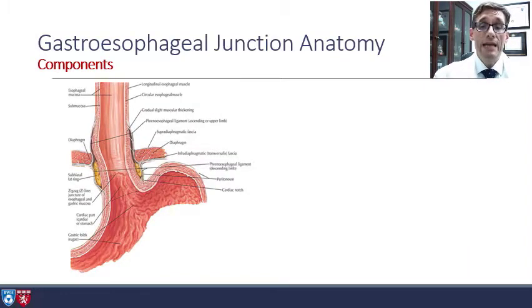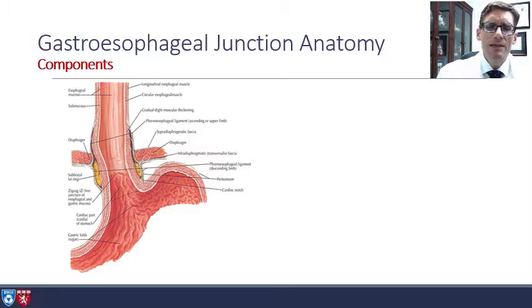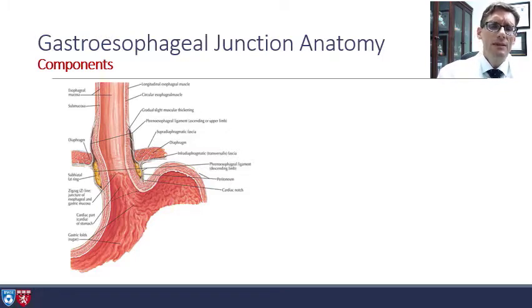It's important to understand the anatomy of the gastroesophageal junction to understand how we're trying to treat this condition. When we think about important anatomic elements, we think of the circular muscles of the esophagus, the diaphragm, and the phrenoesophageal ligament. However, there is much more to consider.